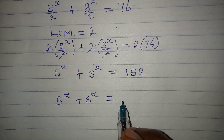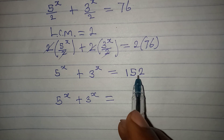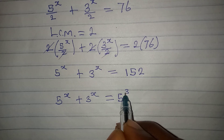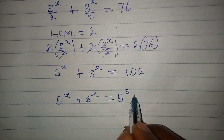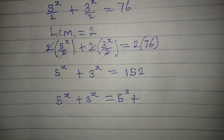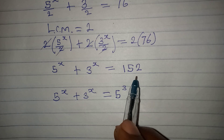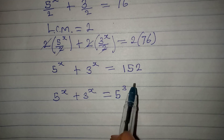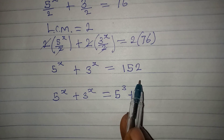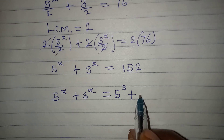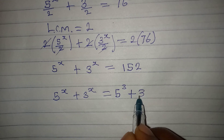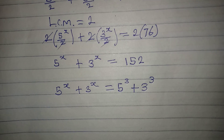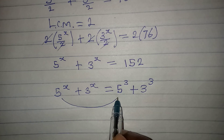5 to the power of 3 gives me 125. Then 152 minus 125 gives us 27, and 27 can be written as 3 to the power of 3. So 152 = 5³ + 3³.